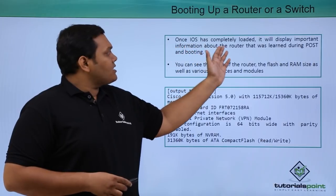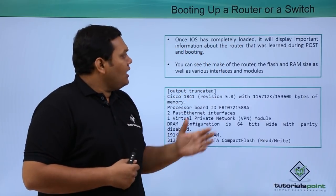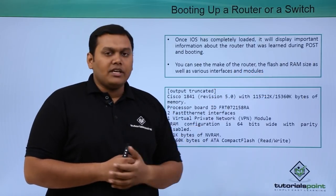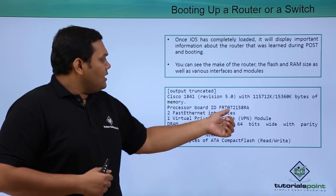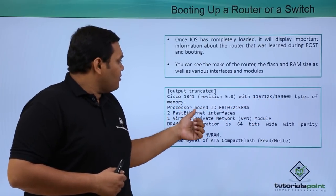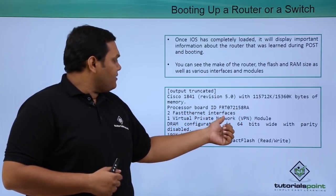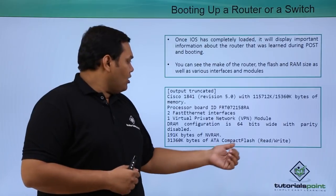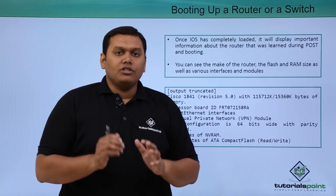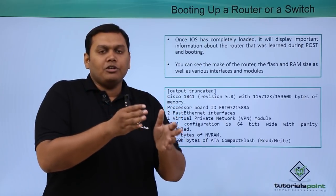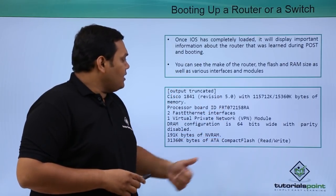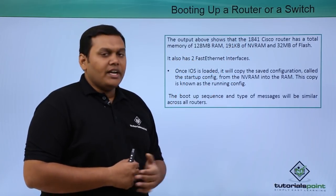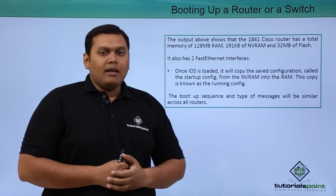Once the IOS has completely loaded, it displays important information about the router, including what was learned during POST and booting. You can see the router's flash and RAM size: it has 128 MB of RAM, 191 KB of non-volatile RAM, and 32 MB of flash. The processor board ID is shown, along with two Fast Ethernet interfaces, one VPN module, DRAM configuration, and ATA compact flash read/write capability.